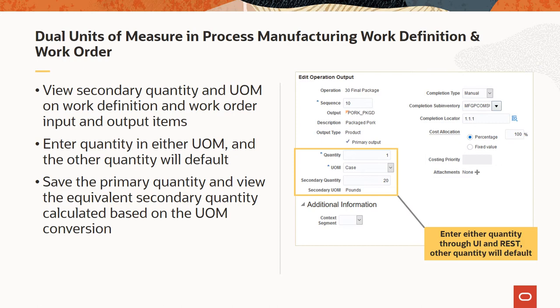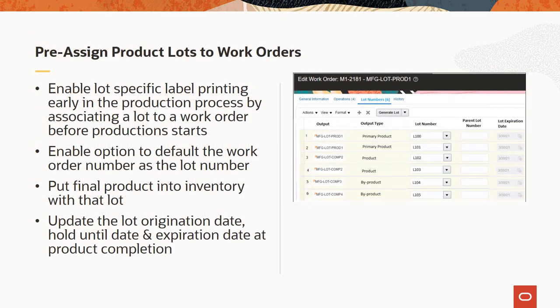It also makes it easier to verify the accuracy of material quantities and understand production execution and reporting in dual units of measure. With this feature, you can pre-assign one or more lot numbers for a product in a manufacturing work order. You have the option to default the work order number as the lot number during work order creation, or enter a lot or generate a lot after the work order is created. During product completion, you will be required to use one of the pre-assigned lots when putting product into inventory, and will have the ability to update the lot origination date, hold until date, and expiration date at product completion. Pre-assigning product lots to a work order can help accurately track product lots, their transaction history, and genealogy relationships throughout the production process.